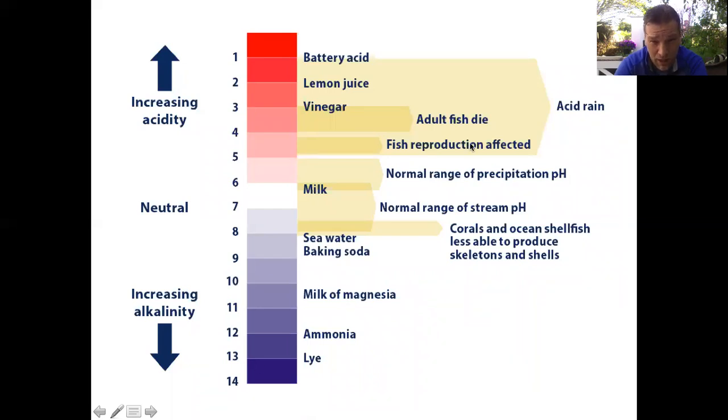So you can see some common household items. Lemon juice is extremely acidic. So is vinegar. Milk is somewhat in the middle. The neutral or normal number for pH is seven, and so that's the range of streams and rivers and lakes. You can see corals and shellfish. They all fall near eight. And then as you go down, you've got magnesium, you've got ammonia, and then lye is extremely basic. So this is your scale.